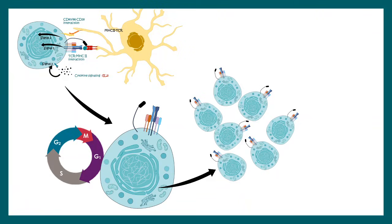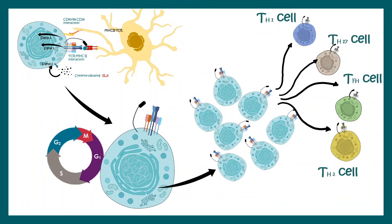After proliferating rapidly, they can be differentiated into several sub-lineages based on the cytokines they encounter. They could become TH1 cells, TH17 cells, T follicular cells, or even TH2 cells. Some of them become T memory cells in the future. If you want to learn the T cell differentiation process in detail, the link is found in the I button or in the description.